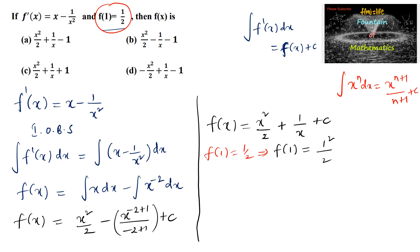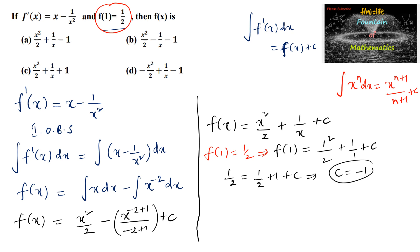We get f(1) = 1 squared by 2 plus 1 by 1 plus c, that is 1/2 equals 1/2 plus 1 plus c, so c equals minus 1.